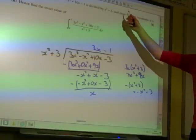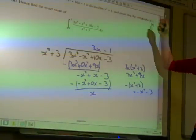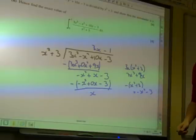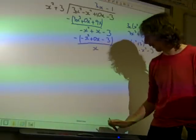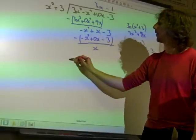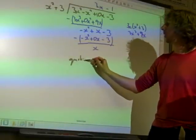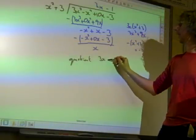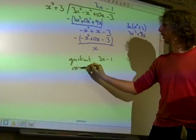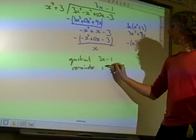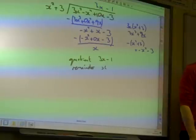The question asks us to write down the quotient and show that the remainder is x. The examiner will get it from what we've done, but it's neat to actually write: therefore, the quotient is 3x minus 1 and the remainder is x.